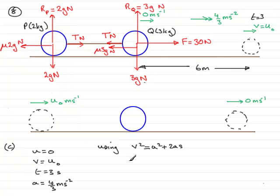Anyway, so we've got that v squared is equal to u squared. So u is zero, so that term disappears. And then we've got two times the acceleration, which was four-thirds. So that's four-thirds times s, the displacement of six meters. So pop six in there. So if you work this out, you'll find that it comes to 16. So v squared equals 16, and so v will be equal to the square root of 16, which is four. So that's four meters per second.